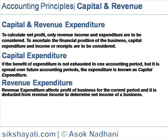Expenditure of Current Assets: Expenditure on current assets for conversion into finished products, for example, raw materials and stores. Expenditure incurred to maintain fixed assets in working order, for example, repairs and renewal, depreciation, cost of spares, etc.